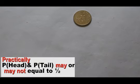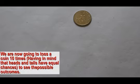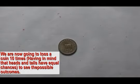However, experimentally, the probability of getting a head or a tail may or may not be a half. We shall try to toss a coin 10 times with an assumption that the heads and the tails have equal chances of showing up.